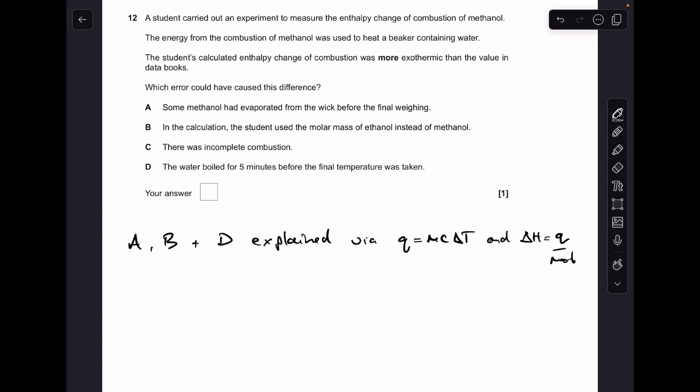Moving on to number 12, so I'm going to explain all four of these, I think it would be helpful for revision, and I'm going to use the Q equals MC delta T, and then delta H equals Q over moles calculation to explain A, B and D. So, starting with A, they've obviously blown the flame out, but then waited a while before weighing the burner, so Q is going to be the same in the Q equals MC delta T part of the calculation, but because some of the methanol's evaporated, the moles of fuel is going to appear to be greater than it should be, so they're dividing their Q by a greater value for moles. So, that's going to give them a lower value for delta H, or a less exothermic value for delta H, so that's not the right answer.